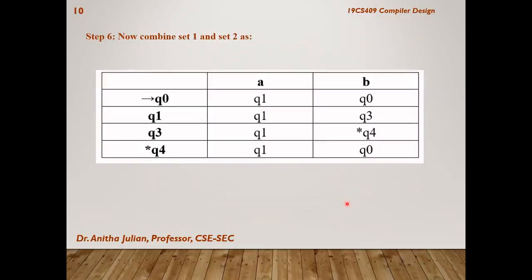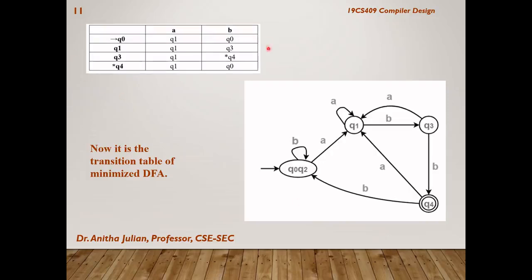Our next step will be to combine both the tables. So, we will just combine the tables and whatever table we obtained, this will be the transition table for our DFA. Three rows from the first table and one row from the second table. So, for this given table, we are drawing the diagram which is going to be the minimized DFA.